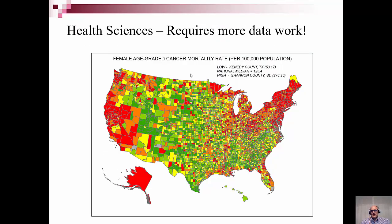Here's an example I've shown in my classes for a while when we apply this to health sciences — a map of female age-graded cancer mortality rates. Age-grading is really important. When we look at cancer mortality rates, they need to be age-graded, because what states are going to have the highest mortality rates? It's going to be where the older populations are — West Virginia, Florida, Arizona. So essentially if you're just mapping mortality rates, you're just mapping where older people live. Age-grading standardizes or normalizes the average age for each county to be the same.